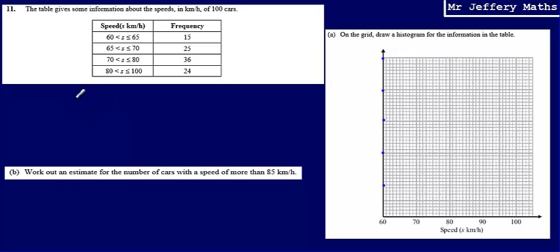This is question 11 from a series of videos taking a look at the Edexcel practice papers. Here we're told that the table gives some information about the speeds in kilometres per hour of 100 cars. And we've got that information there. Then we're told to draw a histogram for the information in the table.